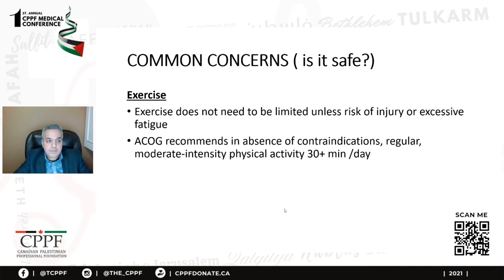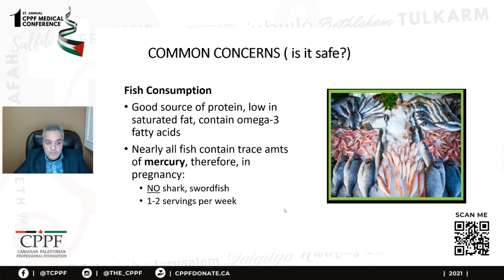Regarding eating fish — fish contains trace amounts of mercury. Generally, it is safe to eat fish during pregnancy, but we should not eat more than one to two servings every week. Two meals of fish per week is enough given concerns about mercury content. Any fish with high concentration of mercury, such as shark or swordfish, should be avoided.